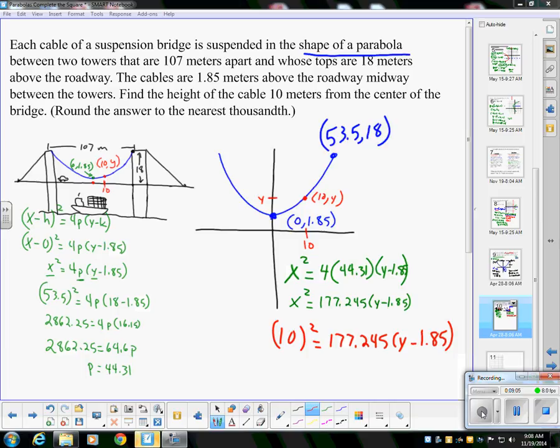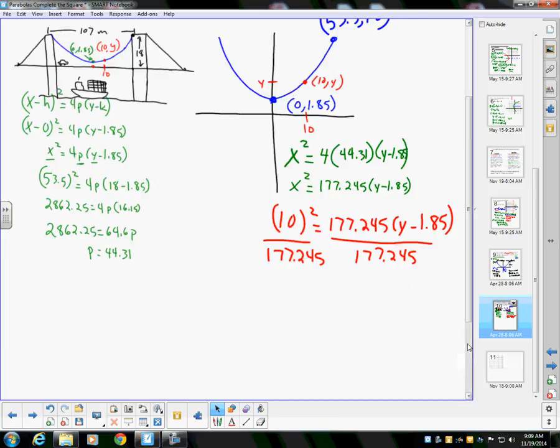Me, I'm not going to distribute that 177.245. I'm not going to do that. I'm going to divide both sides by 177.245. So when I go to divide both sides by that, the result is just simply going to be 10² is 100, so 100 divided by 177.245, I'm doing this in my calculator, that's 0.564 = y - 1.85.